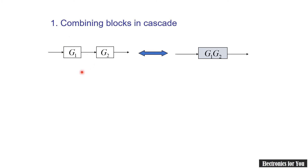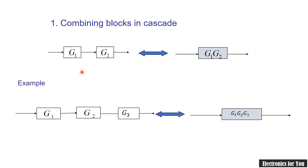For example, if three blocks G1, G2, and G3 are connected in cascade or in series, then the resultant will be the multiplication of all three transfer functions: G1 times G2 times G3.